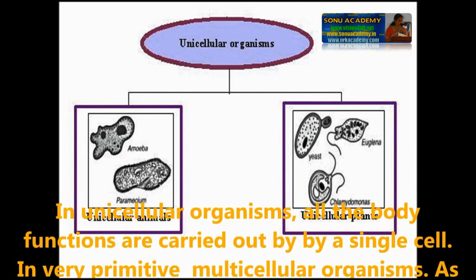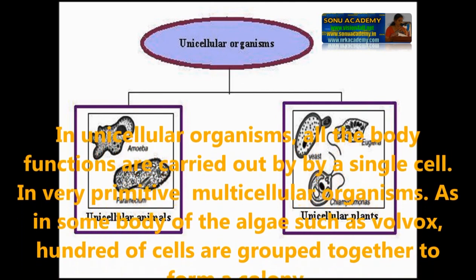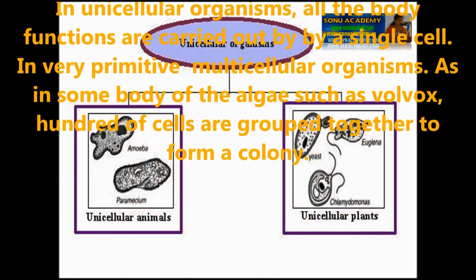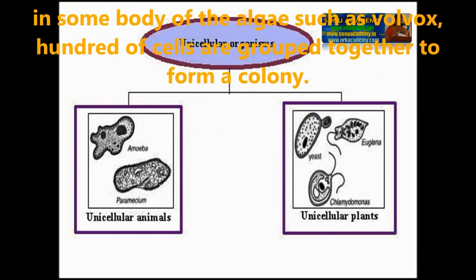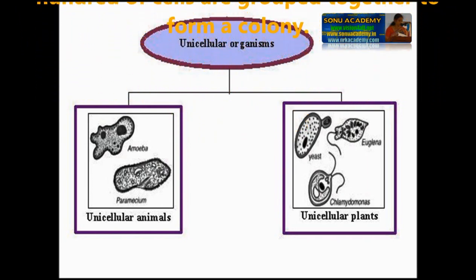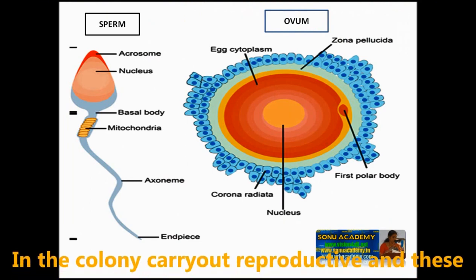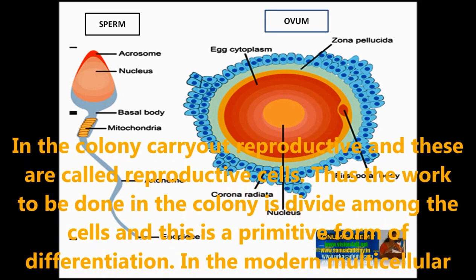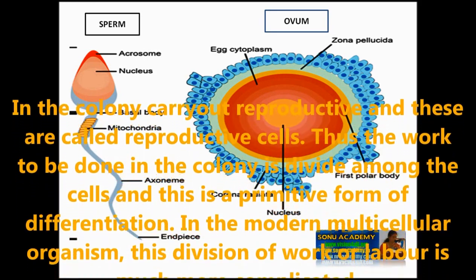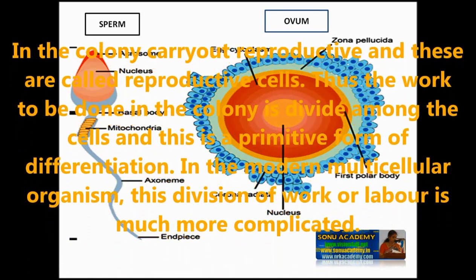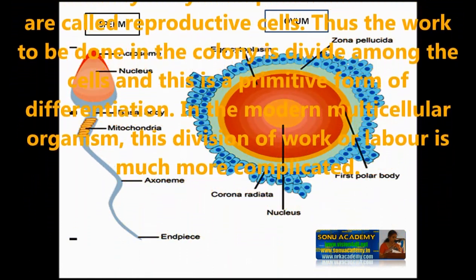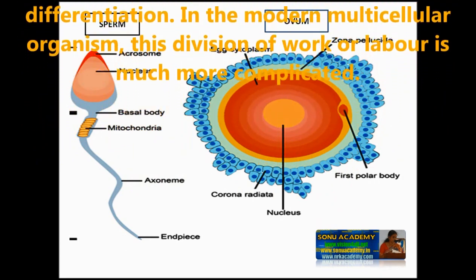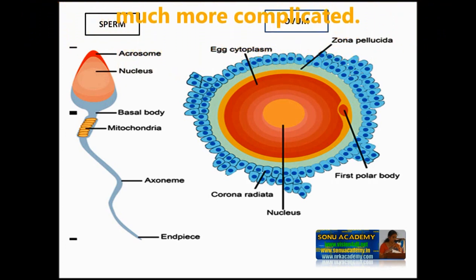In unicellular organisms, all the body functions are carried out by a single cell. In very primitive multicellular organisms, as in some algae such as Volvox, hundreds of cells are grouped together to form a colony. In the colony, most of the cells are vegetative cells. Only a few cells carry out reproduction and are called reproductive cells. Thus, the work to be done in the colony is divided among the cells, and this is the primitive form of differentiation. In modern multicellular organisms, this division of labor is much more complicated.